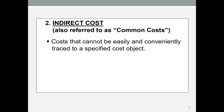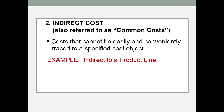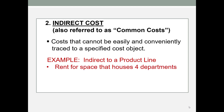An indirect cost, on the other hand — also called a common cost — cannot be easily and conveniently traced to a specific cost object. So if we're looking at a product line, what might be indirect to that product line would be rent for space that houses four departments. That rent would need to be allocated to the four departments — it might be allocated based on square feet, or it might be divided four ways — but the bottom line is that it cannot be traced to a given product line.